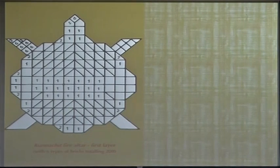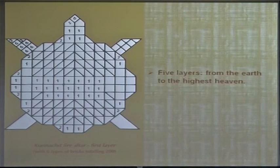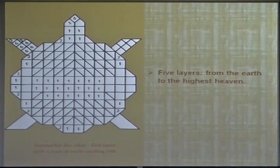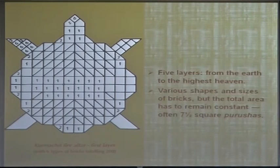This is the Kurma Chitti — the tortoise altar. Each altar has five layers because the bottommost represents the earth and the highest represents the heavens, with three intermediary worlds in between. Each layer has 200 bricks, totaling 1,000 bricks for the altar. However, you are not allowed to use the same shapes of bricks from one layer to the next — all shapes must change. There are at least six types of bricks in a single layer, yet the constraint is that you can change the shape of the altar but you cannot change its area.